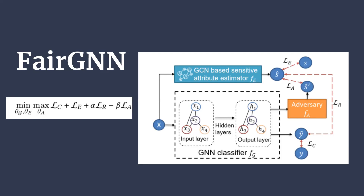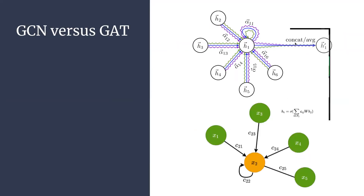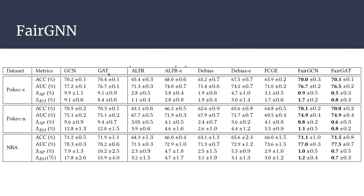Question from Deborah: did the paper analyze performance when the fairness strategy is not imposed — what is the accuracy trade-off? The author does report accuracy and AUC scores. For single-layer GNNs, the accuracy degradation is minimal — from 70.2% to 70.0% and from 70.4% to 70.1% — while statistical parity is reduced by 9% and equal opportunity is reduced to 1.7%, where lower values are better.